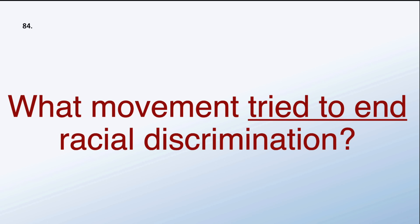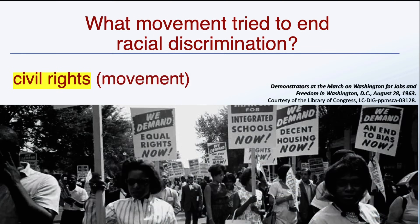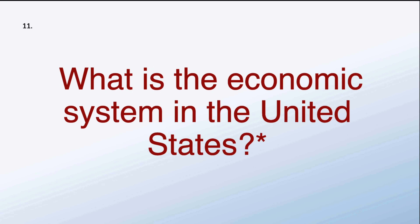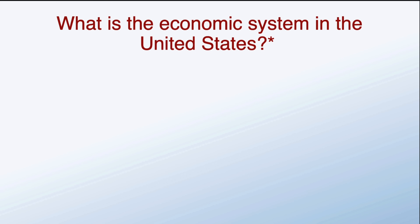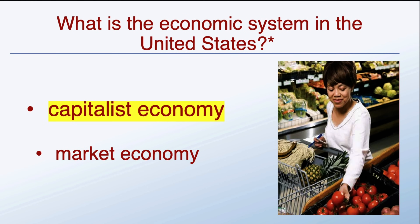What movement tried to end racial discrimination? The civil rights movement tried to end racial discrimination. What is the economic system in the United States? It's a capitalist economy. The other answer is market economy — either answer is correct.